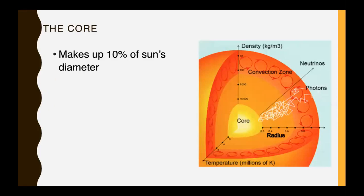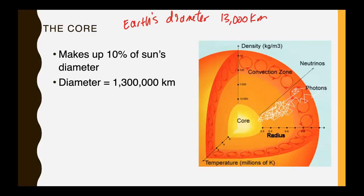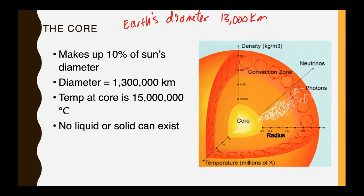Let's start with the core. The core makes up 10% of the sun's diameter. The entire diameter of the sun is 1.3 million kilometers. Just as a comparison, Earth's diameter is just over 12 and a half thousand, but let's just call that 13,000 kilometers. So the sun is how many more times the diameter of Earth? The temperature in the core is 15 million degrees, well beyond that magic number of 10 million that you need for fusion to start. At this temperature, no liquid or solid can exist.